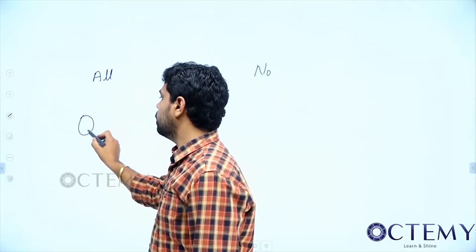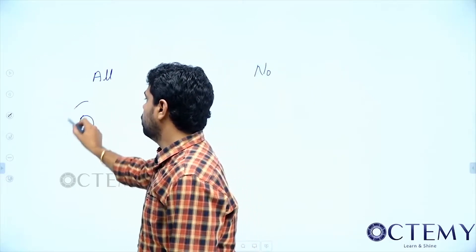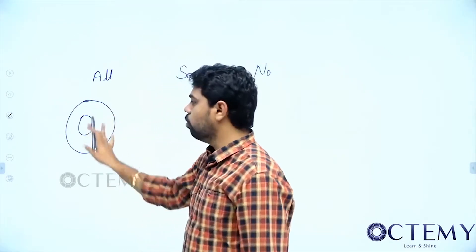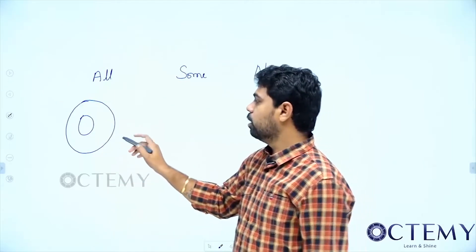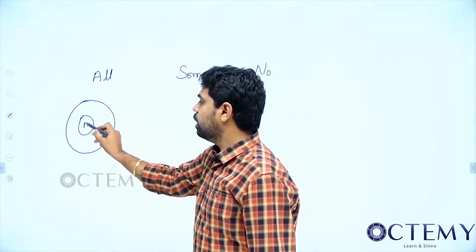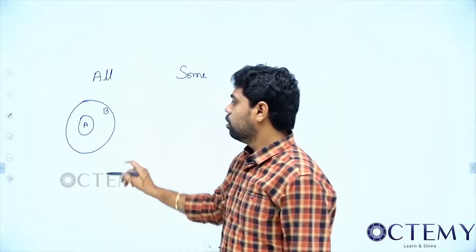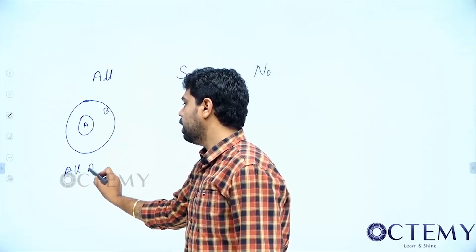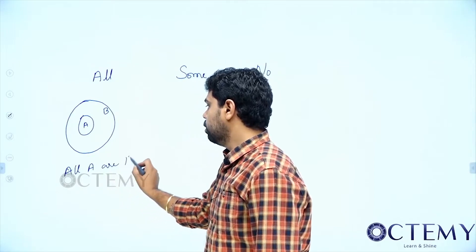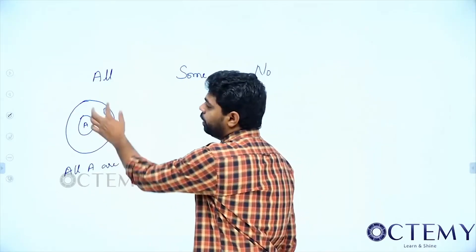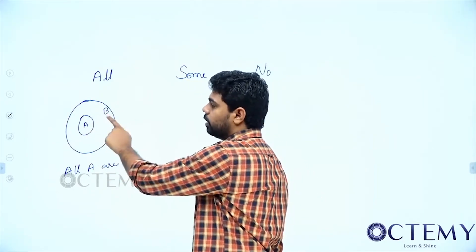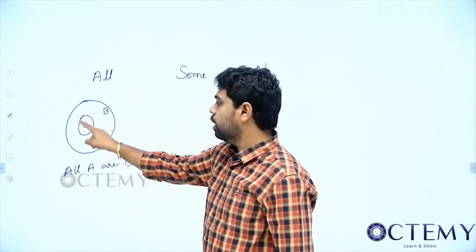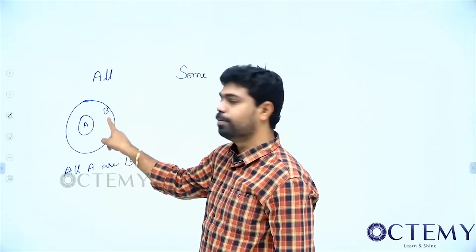So, 'all' means — suppose this is A and this is B. All A are B means every part of A should be inside B. From this, can I say that some B are A? Yes — only some part of B is A, but all parts of A are B.